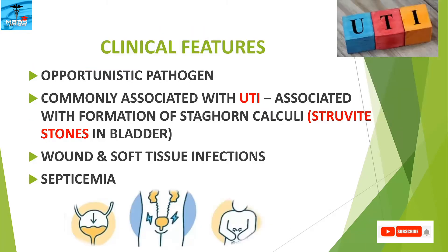Clinical features: Proteus are opportunistic pathogens commonly associated with urinary tract infections. They are associated with the formation of staghorn calculi — that is, they form struvite stones in the bladder. They also cause wound and soft tissue infections and septicemia.